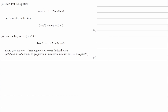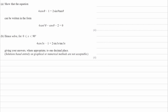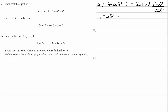For part A, we want to show that this equation here can be rewritten in this form. So I'm going to start off by writing this out. So 4 cos theta minus 1, that's equal to 2 sine theta. And the tan we can rewrite as sine theta over cos theta. So then the right hand side becomes sine times sine is sine squared, so 2 sine squared theta all over cos theta.